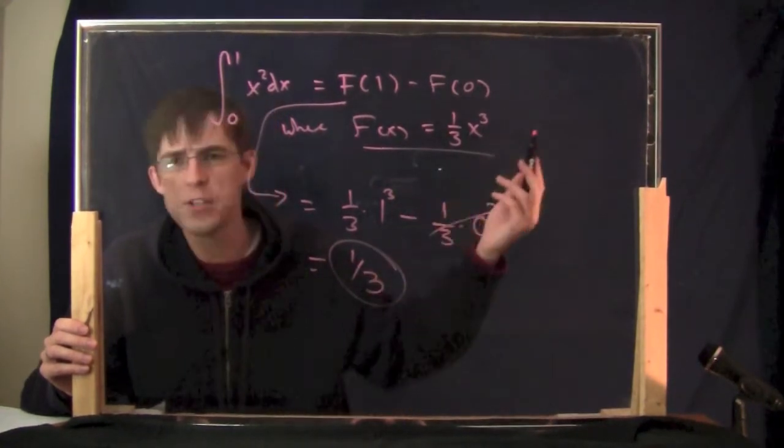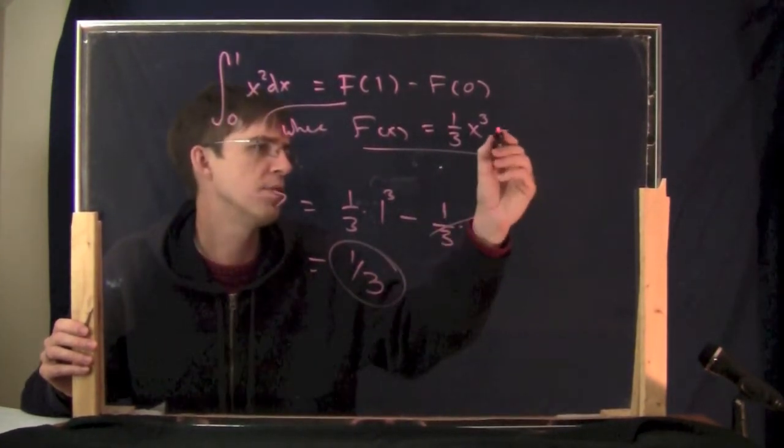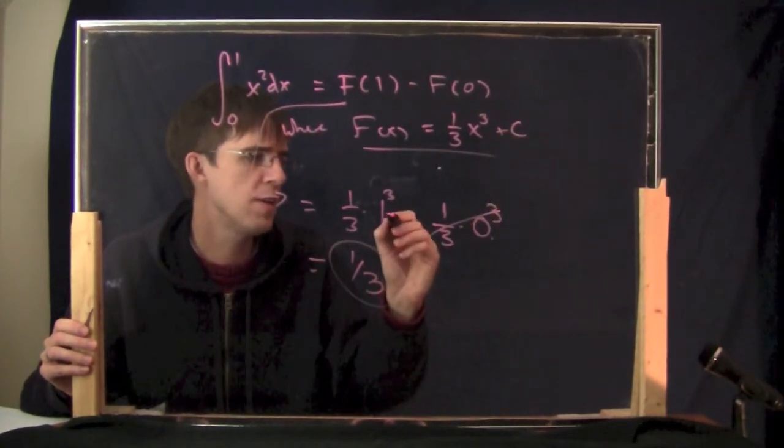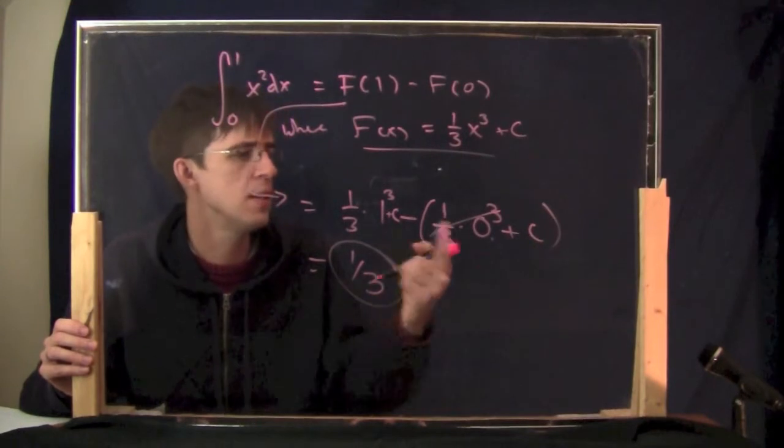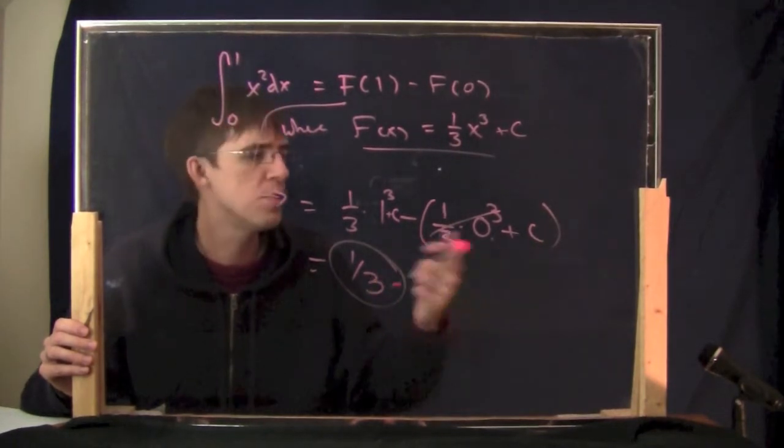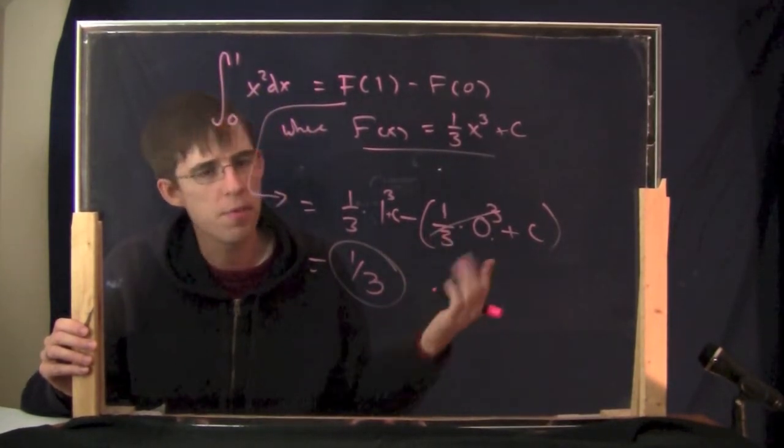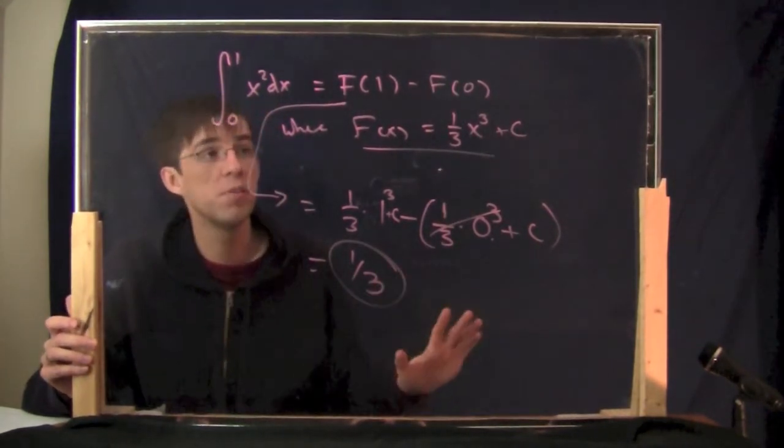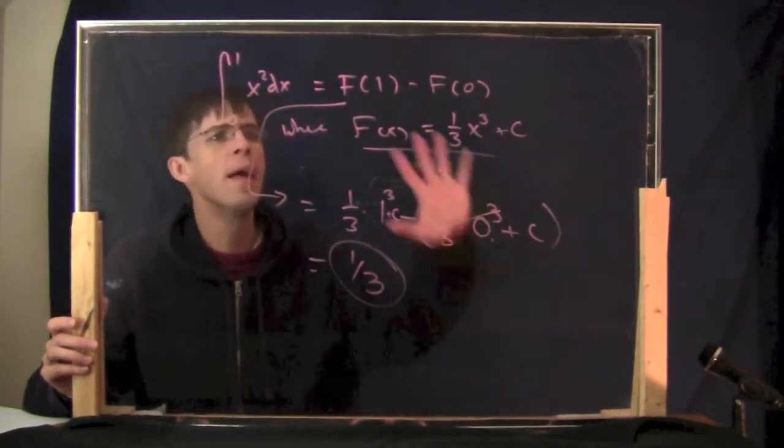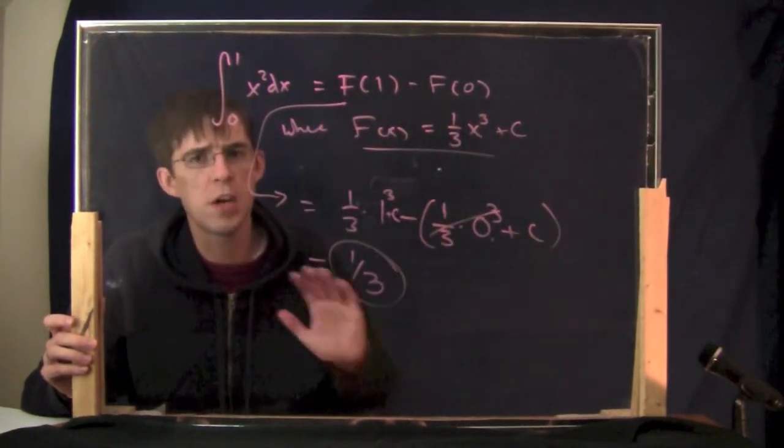Why does the plus c not matter? Just imagine, what would have happened if I put the plus c? Put the plus c. Then right here, there would have been a plus c. And then right here, when you subtract, there would have been a plus c. And because the minus sign distributes, the c's would cancel out, and you get one-third anyway. So when you're doing the fundamental theorem of calculus, actually, the plus c is irrelevant.